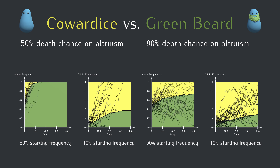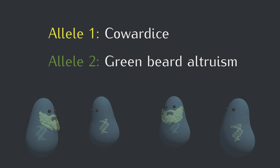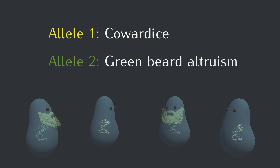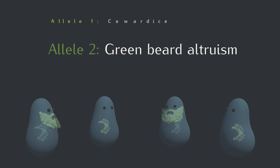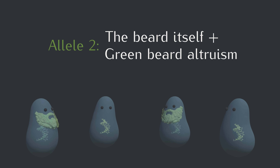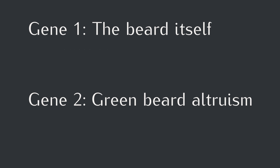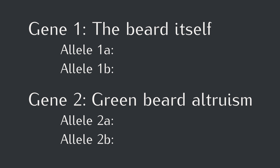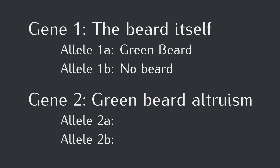So we have a simple version of green beard altruism working, but we should check how it does when things are a bit more complex. We can notice that this one green beard allele is doing kind of a lot — it doesn't just code for altruism toward green beards, it also codes for the green beard itself. So let's split those parts into two independent genes, each with two alleles. The first gene's alleles code for a green beard or no green beard, and the other gene's alleles code for altruism toward green beards or no altruism.